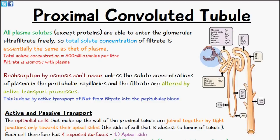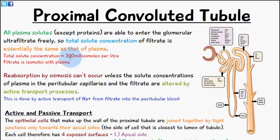All of the plasma solutes, with the exception of large proteins, get filtered through to form the glomerular ultrafiltrate. The components of the glomerular ultrafiltrate are therefore pretty much the same as blood plasma, which means the concentration is also going to be the same — 300 milliosmoles per liter, the total solute concentration. So the filtrate at this point is iso-osmotic with plasma.